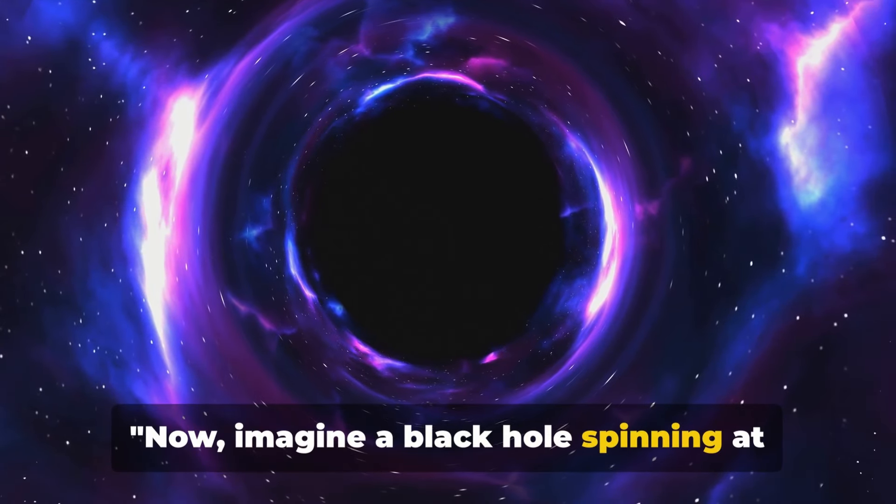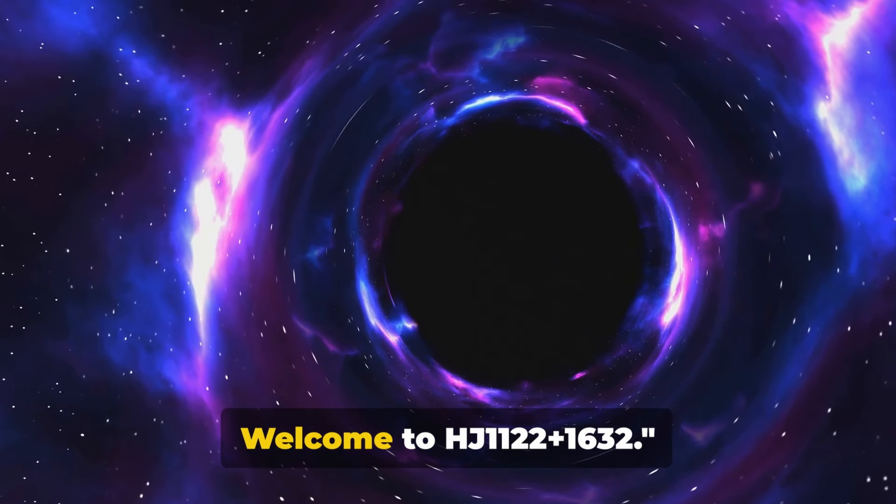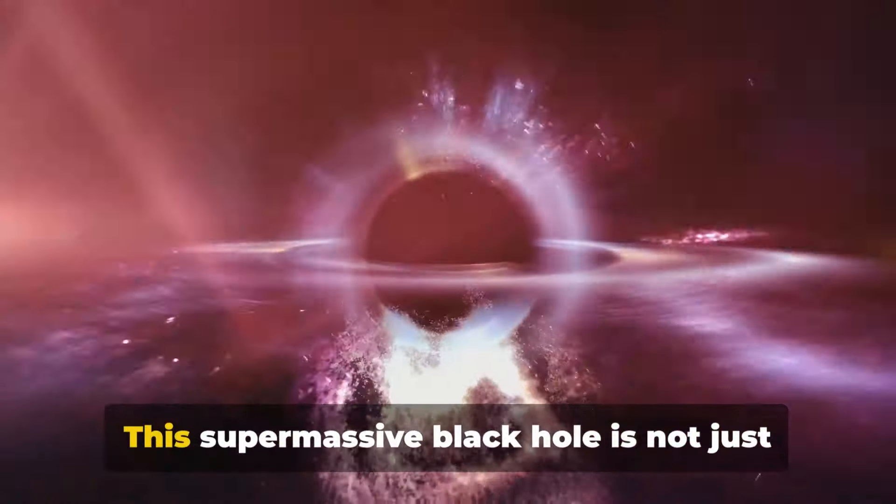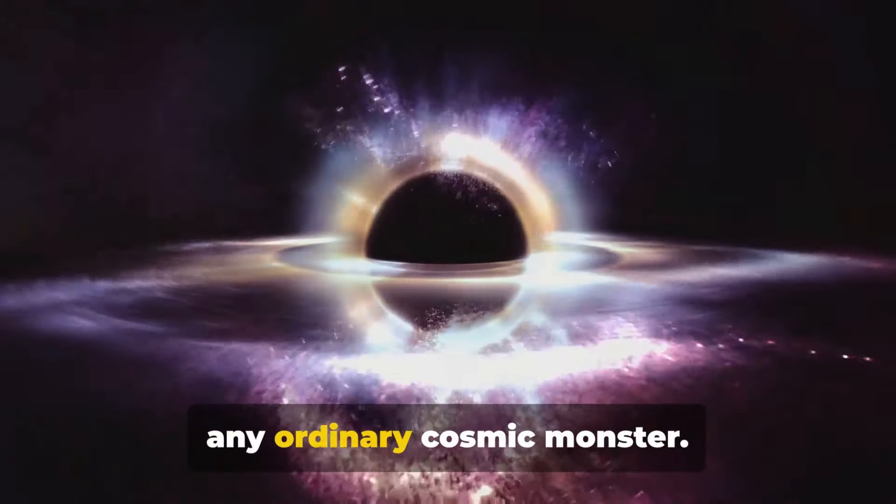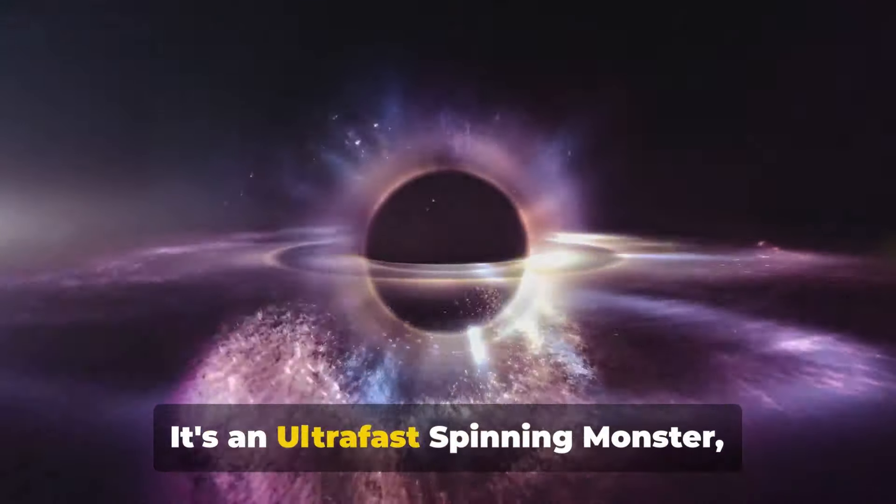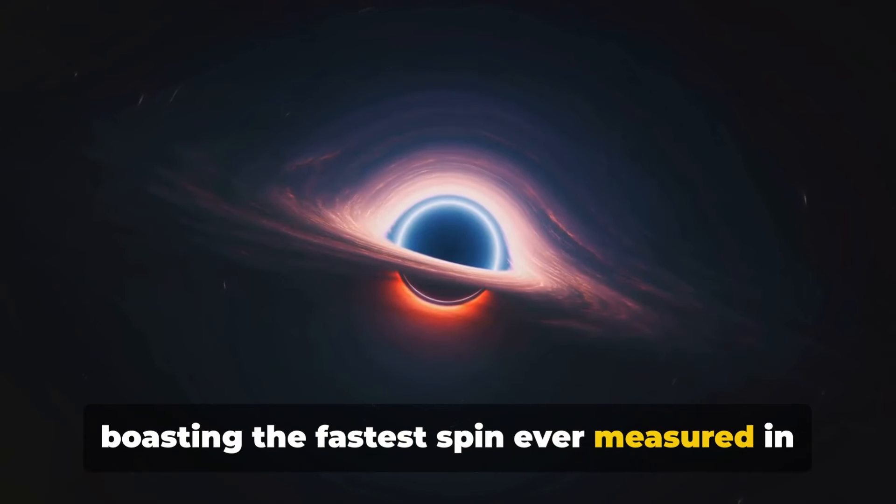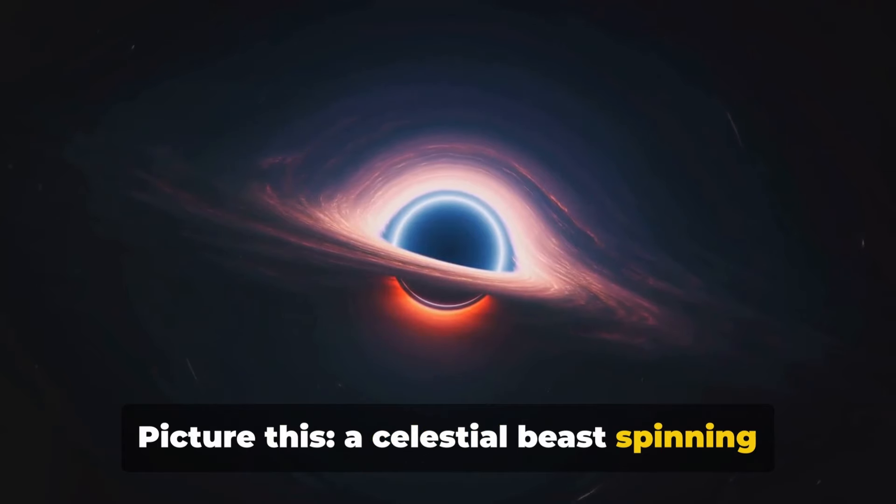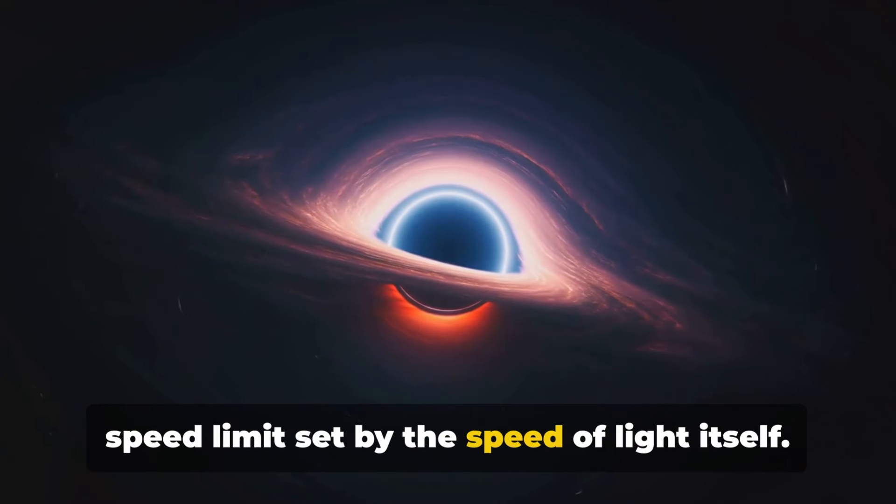Now imagine a black hole spinning at 99% the speed of light. Welcome to HJ 1122 plus 1632. This supermassive black hole is not just any ordinary cosmic monster. It's an ultra-fast spinning monster boasting the fastest spin ever measured in the known universe. Picture this. A celestial beast spinning so fast it's nearly reaching the cosmic speed limit set by the speed of light itself.